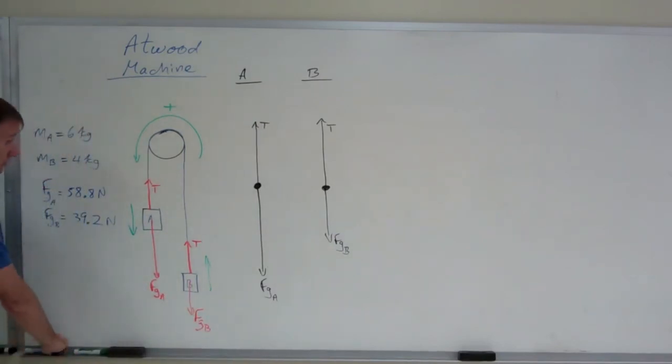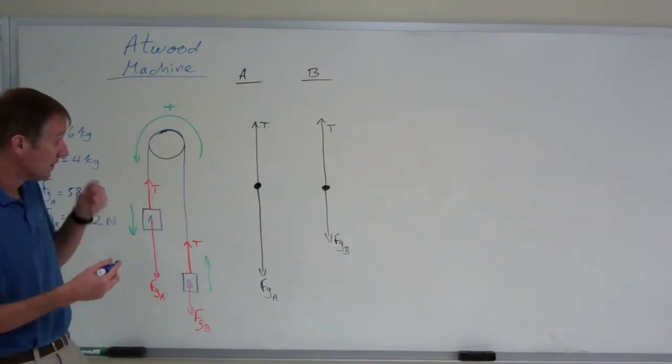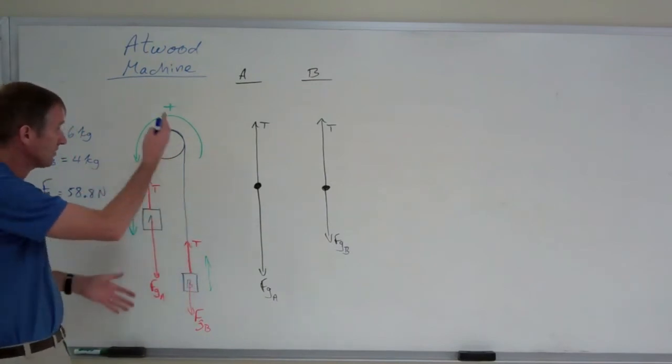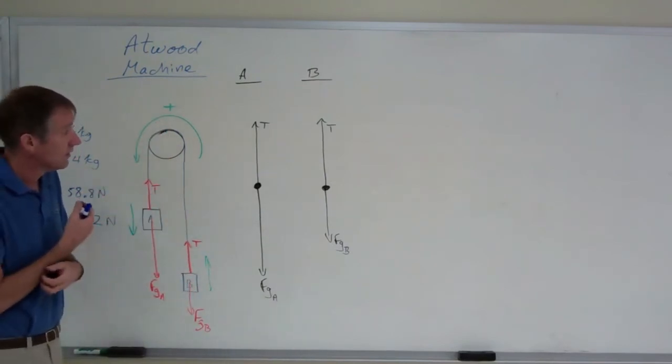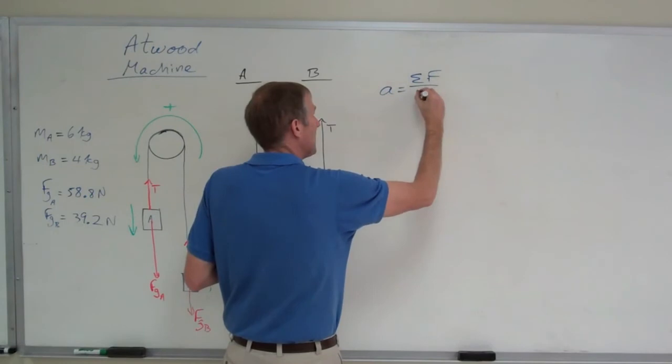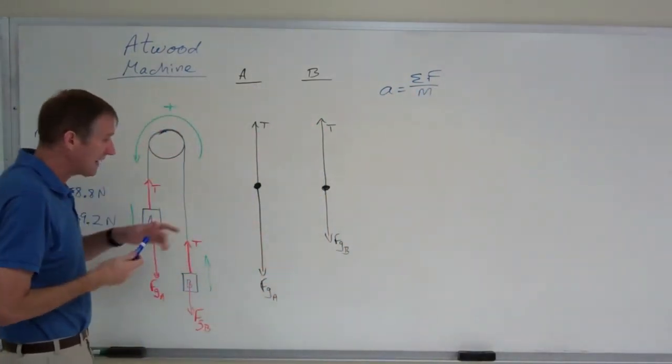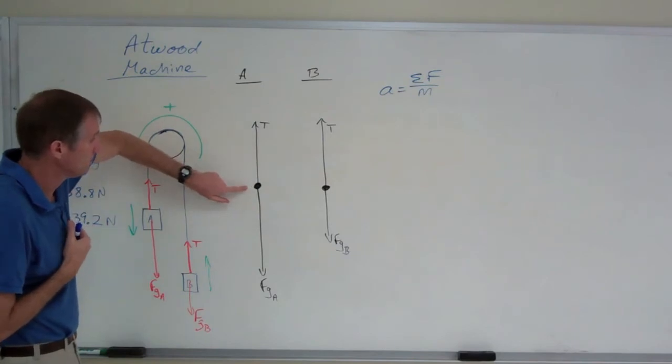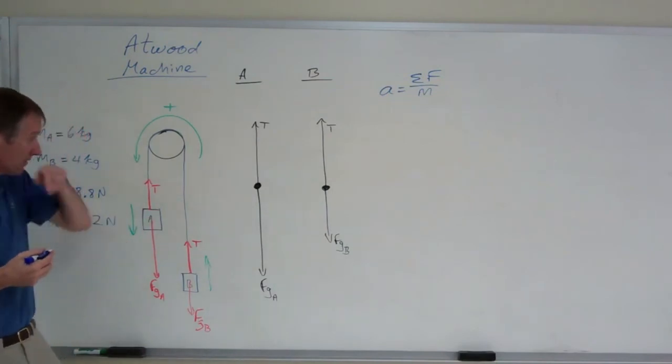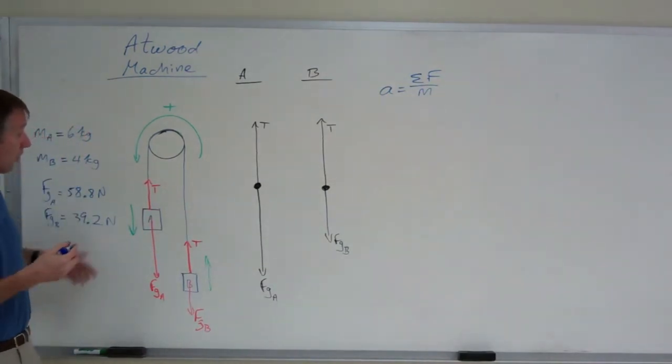Now, to find the acceleration of this, to find the acceleration of either block, find the acceleration of the system. This is a compound system. A and B, two separate blocks attached by a string. Find the acceleration of the system. Acceleration equals net force all over mass. You cannot look at the individual blocks to find the acceleration because you don't know the tension. But if you look at the whole system, then the tension becomes internal. The net force acting on the system is the difference between the weights and those we know.